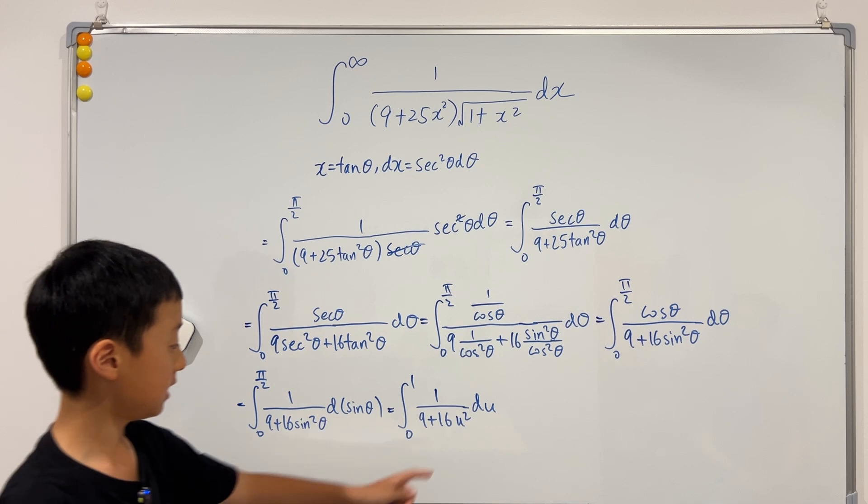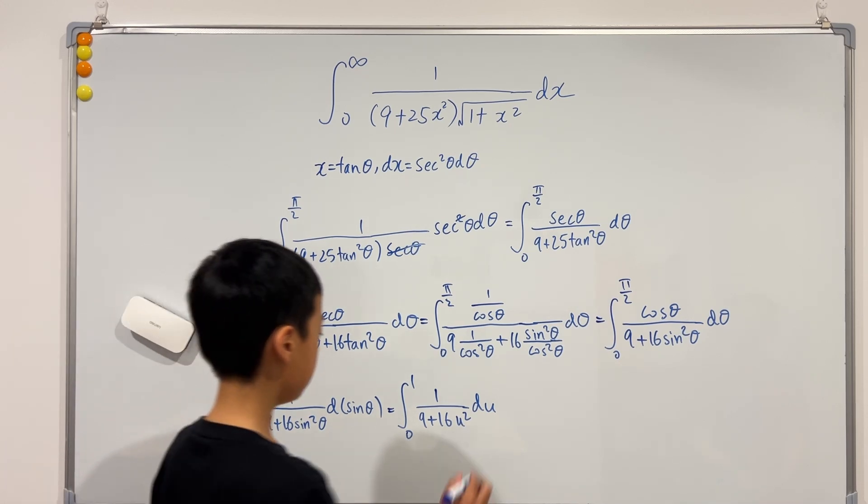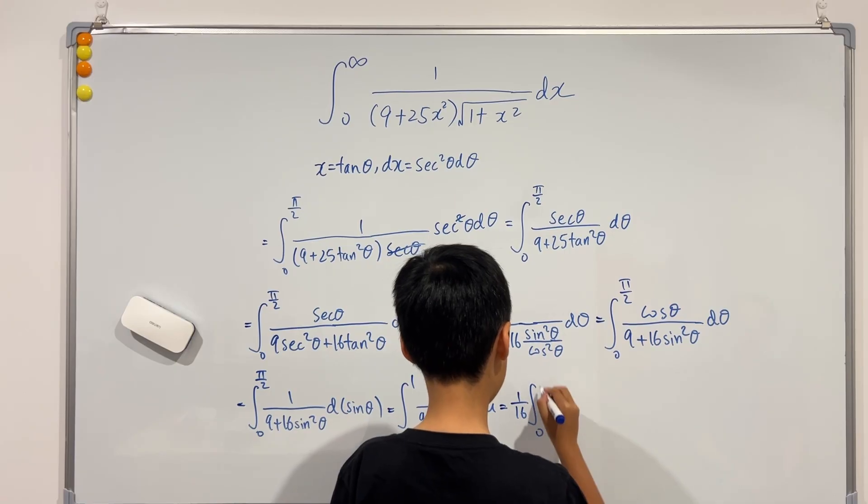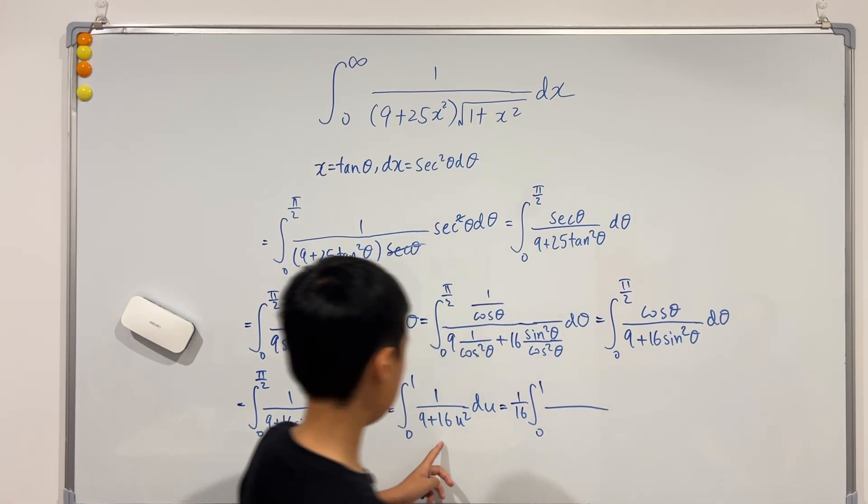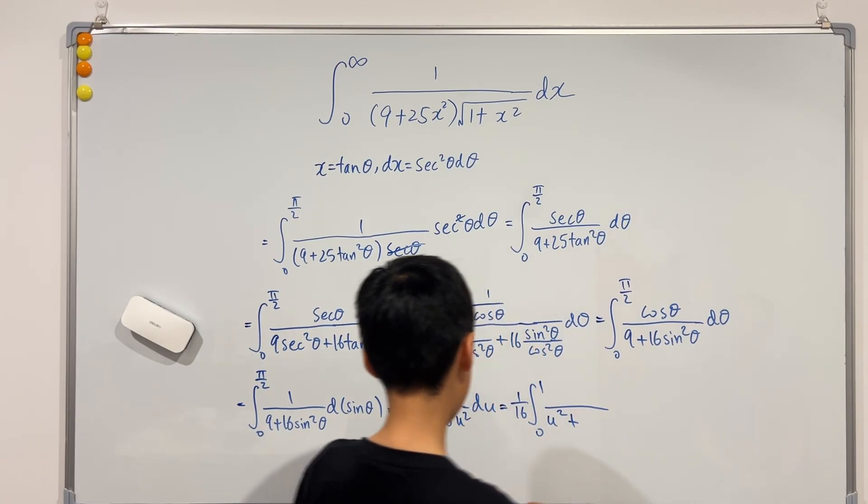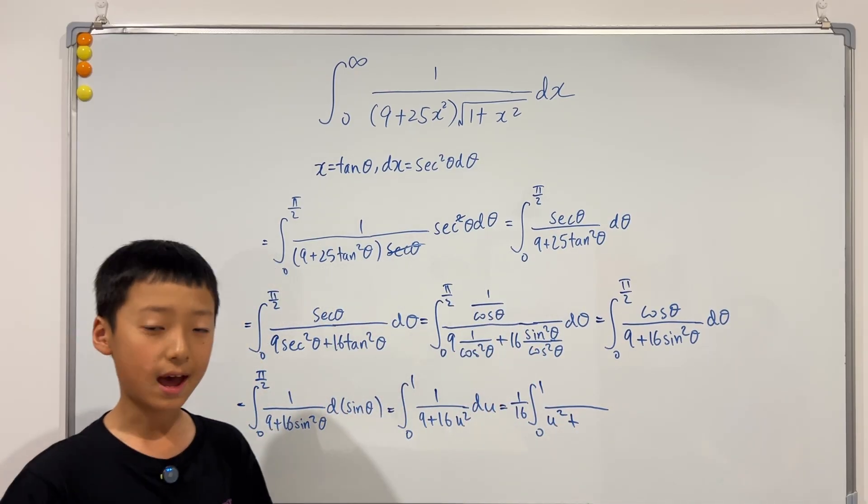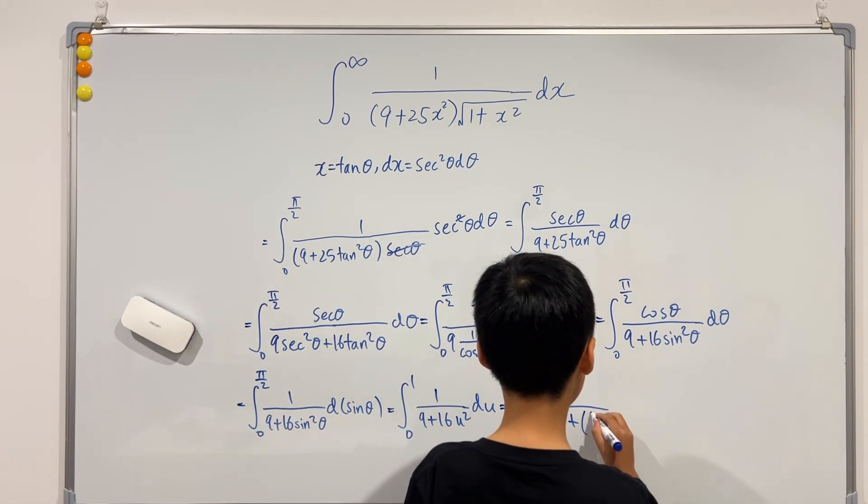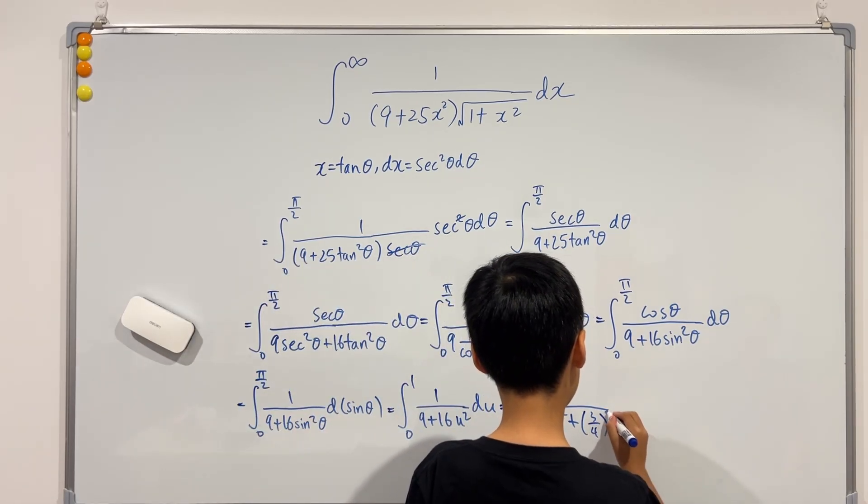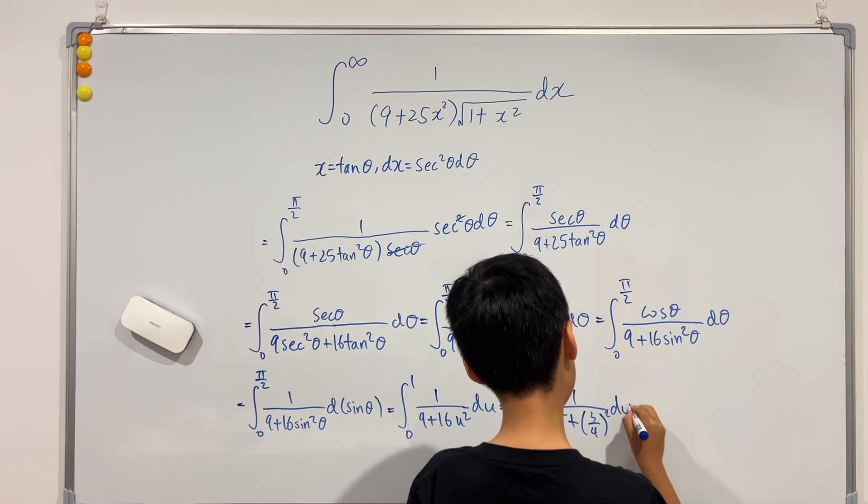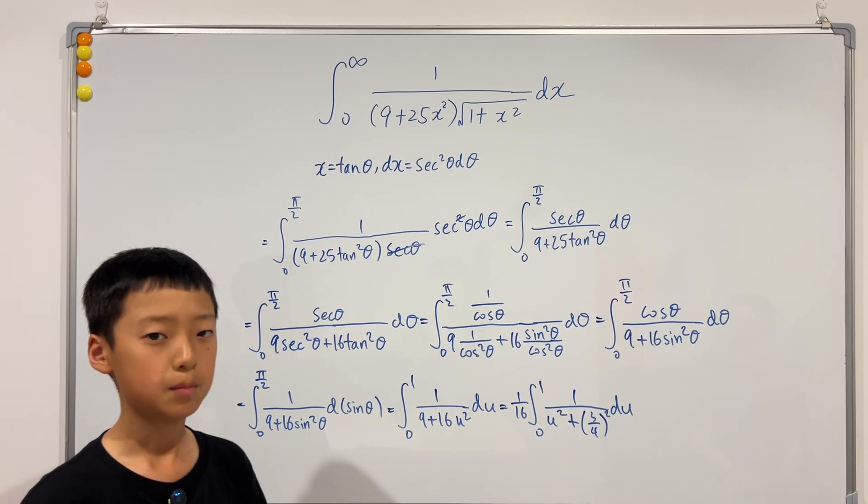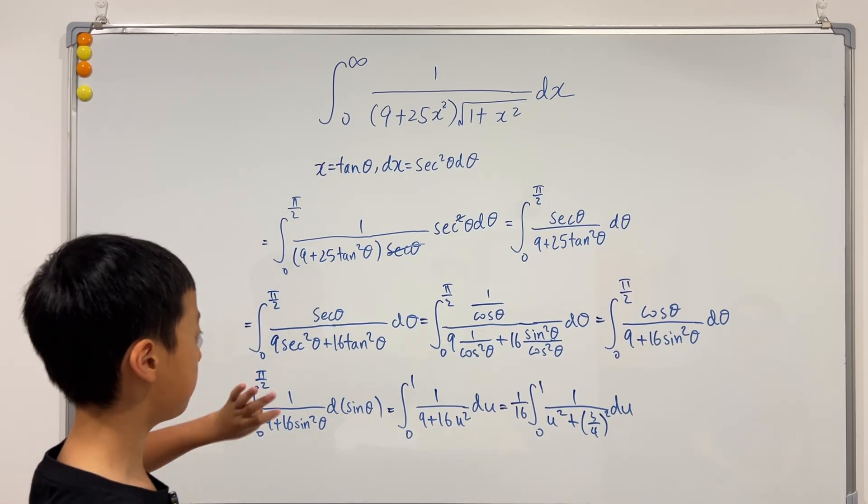So now if I take the 1 over 16 outside, then the bottom will just be u squared plus 9 over 16, which is equal to 3 over 4 squared. So now this is in standard inverse tangent form. But before we do that, I'm going to rub the board out.